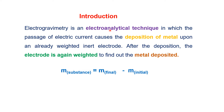Electrogravimetry is an electroanalytical technique in which the passage of electric current causes the deposition of metal upon an already weighed inert electrode. After the deposition, the electrode is again weighed to find out the metal deposited. The two terms M-final and M-initial are given: M-initial is the mass of the electrode before deposition, and M-final is the mass of the electrode after deposition. The amount of metal deposited equals M-final minus M-initial.